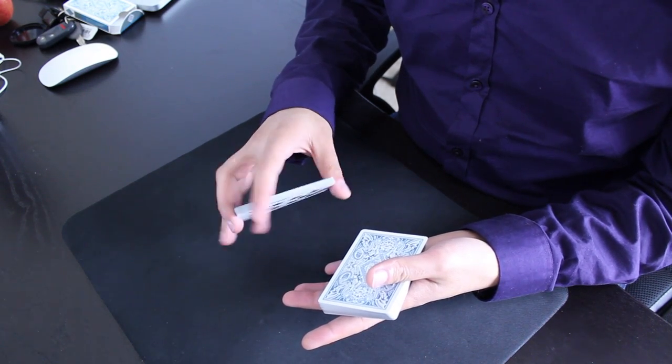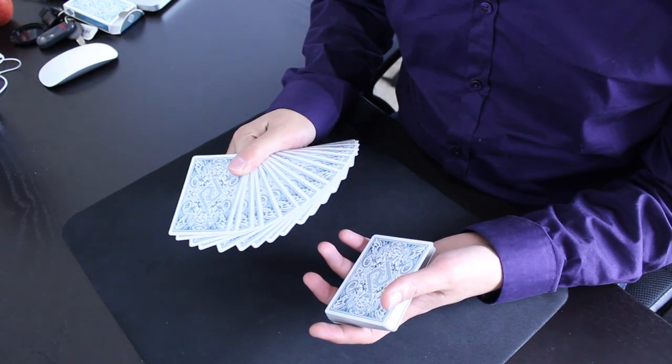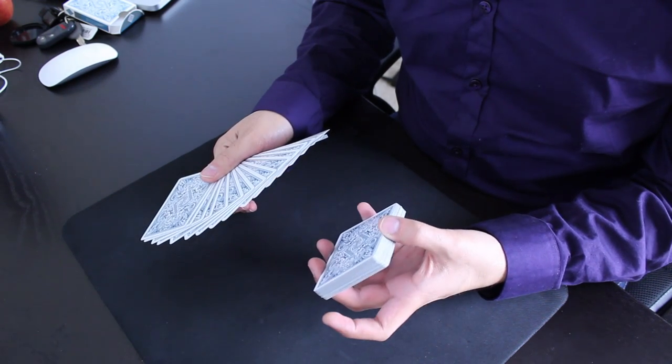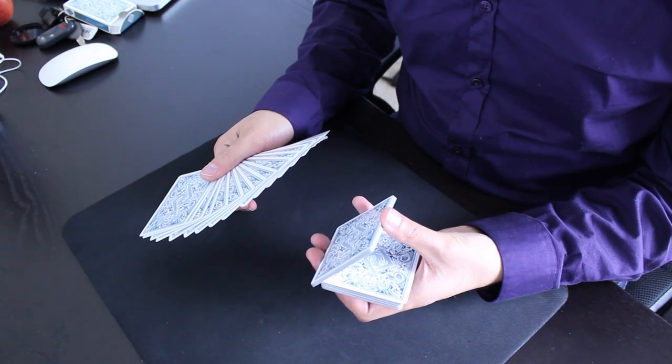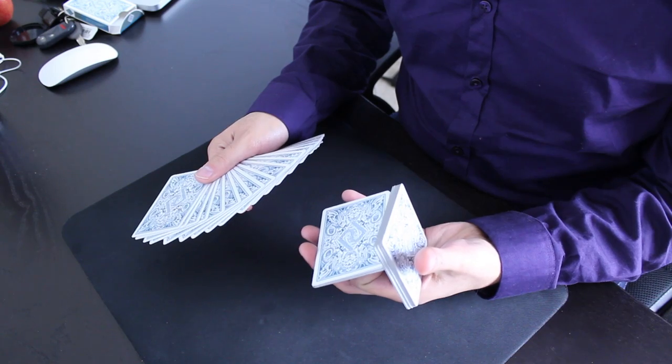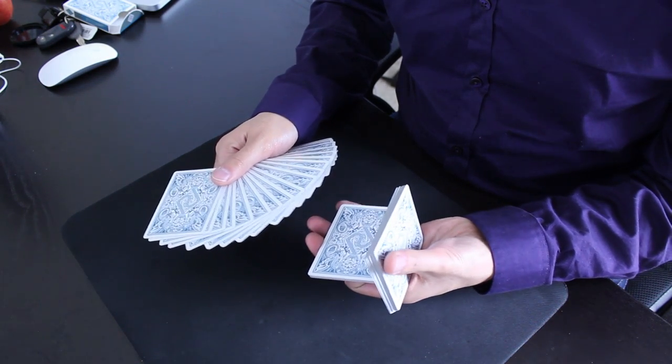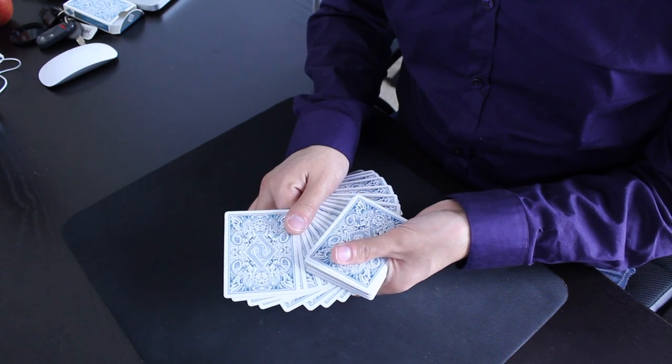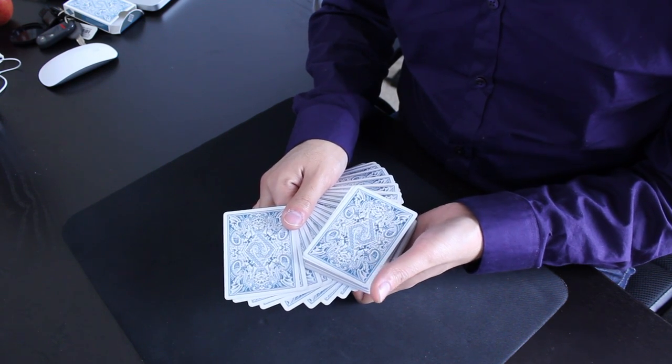With the remaining cards in your right hand, you fan them out, one-handed fan style. As you do that, you're gonna do the charlier cut and instead of actually closing the charlier cut, you're actually gonna stick the fan in between the two packets and catch this packet on top like that.